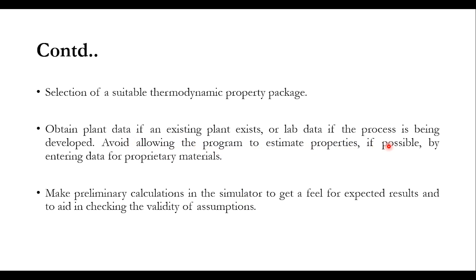Make preliminary calculations in the simulator to get a feel for expected results and check validity of assumptions. For columns, start with ideal stage models before moving to mass transfer. Ideal stage calculations are faster, and the column is easier to troubleshoot if convergence problems appear. If you have a complex plant with initial information like compressor and mixer data, these blocks can be solved. But if a heat exchanger's stream comes from the 7th or 8th step in the process, it's hard to simulate initially.